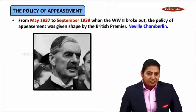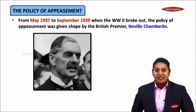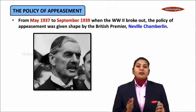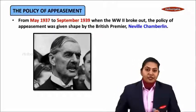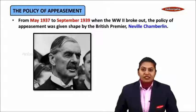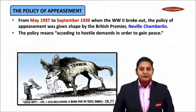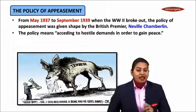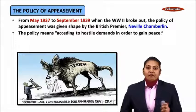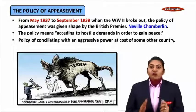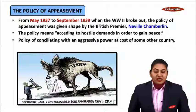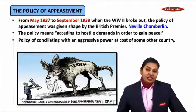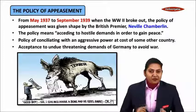From May 1937 to September 1939, when World War II broke out, the policy of appeasement was given shape by British Prime Minister Neville Chamberlain. This policy means acceding to hostile demands in order to gain peace.